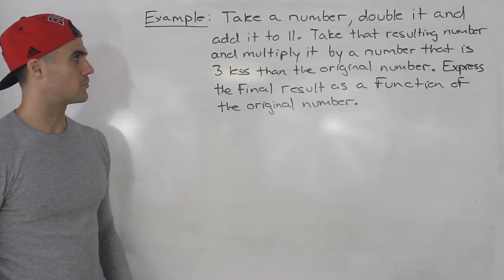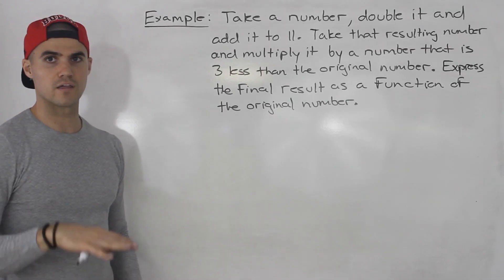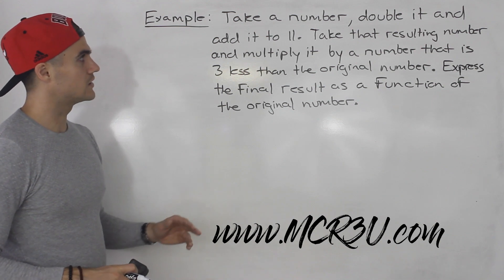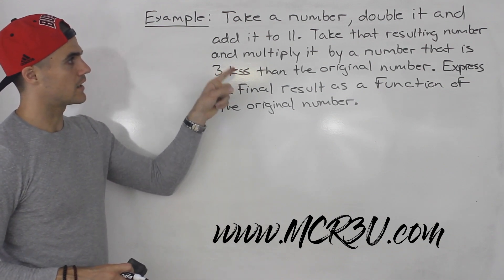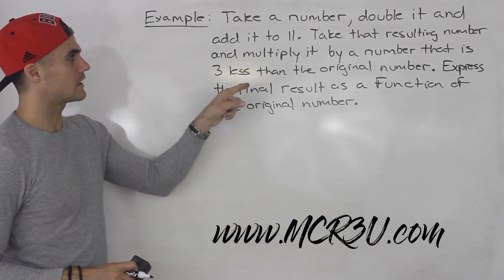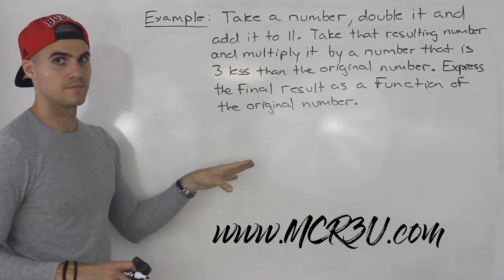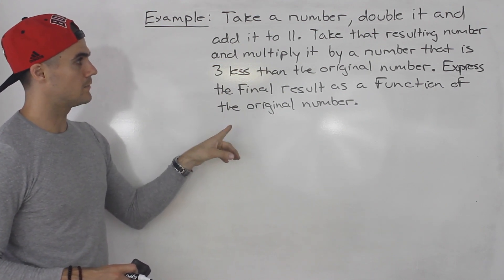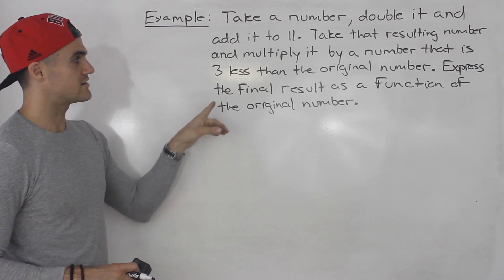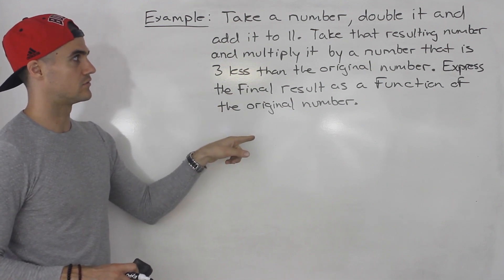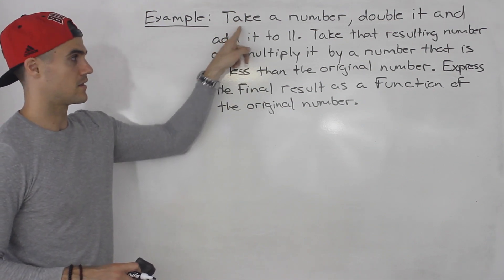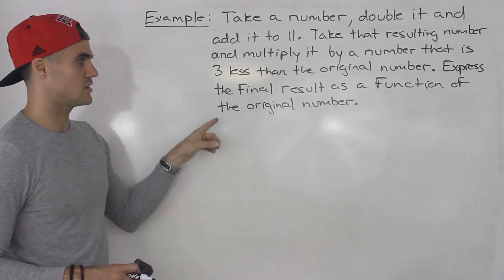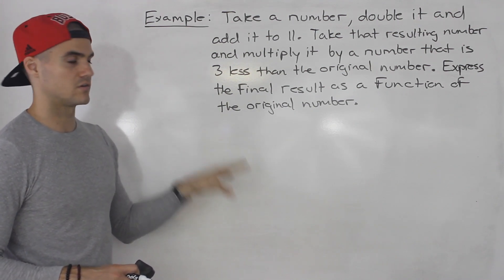In this video we're going to deal with another word problem with function notation. This one's fairly unique: we take a number, double it, and then add it to 11. Then we take that resulting number and multiply it by a number that is three less than the original number we started with. Express the final result as a function of the original number.